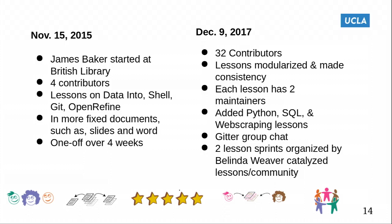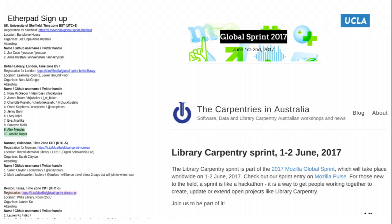James Baker started in 2015 with four contributors and four lessons, intended as a one-off, but word got out in the Software Carpentry community. James connected with Belinda Weaver in Australia, a powerhouse who worked with him to develop the network. As of two days ago we have 32 contributors to our lessons, and we've added lessons in Python, SQL, and web scraping, in addition to improving existing ones. We use Gitter, a group communication tool integrated with GitHub, to collaborate.